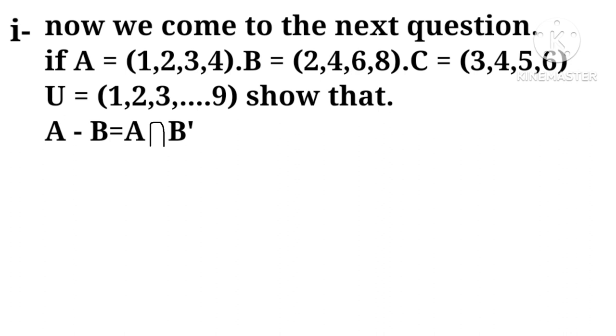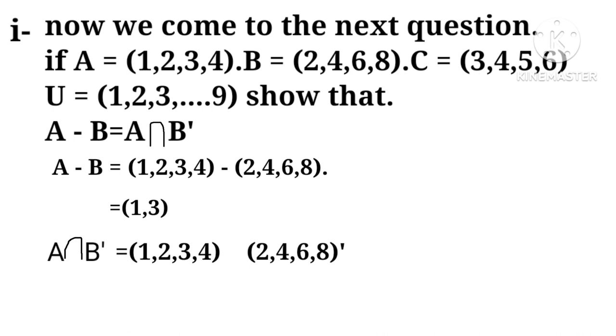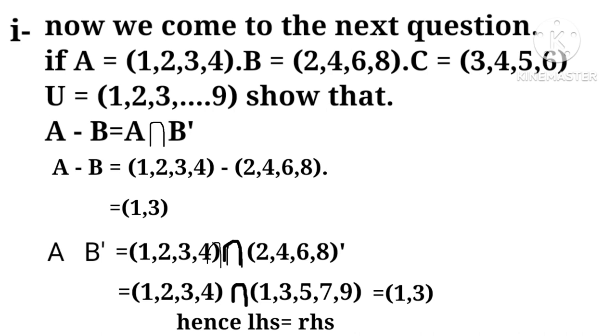Putting values for A and B in LHS, we get A minus B equals 1, 2, 3, 4 minus 2, 4, 6, 8 equals 1, 3. Now putting values in RHS, we get equals 1, 2, 3, 4 intersection 2, 4, 6, 8 complement equals 1, 2, 3, 4 intersection 1, 3, 5, 7, 9 equals 1, 3. Hence, LHS equals RHS.